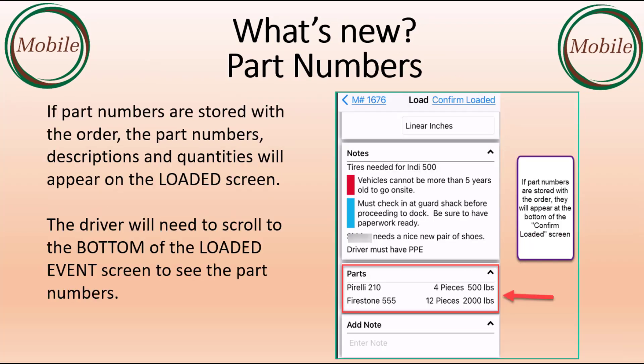If part numbers are stored with the order, the part numbers, descriptions, and quantities will appear on the load event screen. The driver will need to scroll to the bottom of the load event screen to see the part numbers.